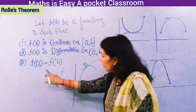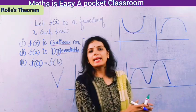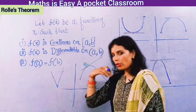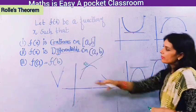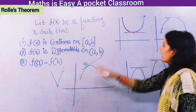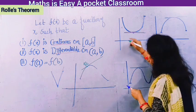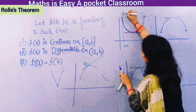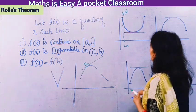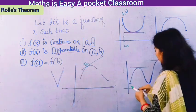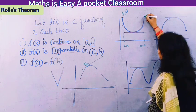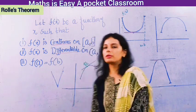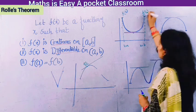The third condition: the function's value at a should equal the function's value at b, meaning f(a) = f(b). These three are the necessary conditions for Rolle's theorem. Rolle's theorem can be applied only if these three conditions are satisfied.